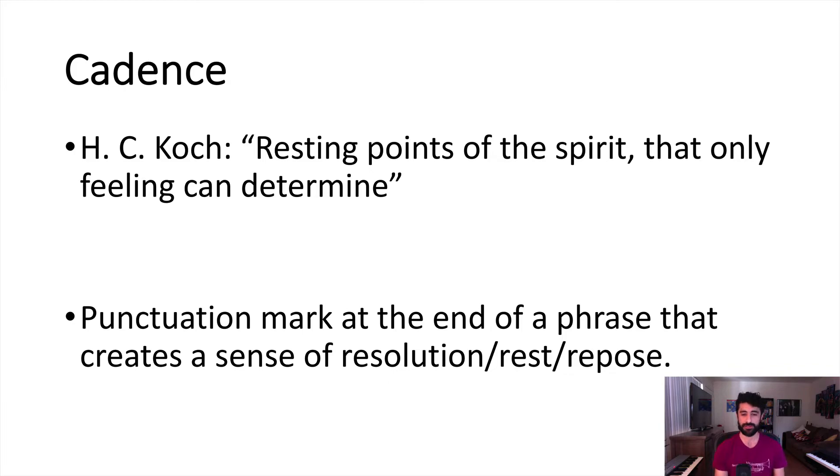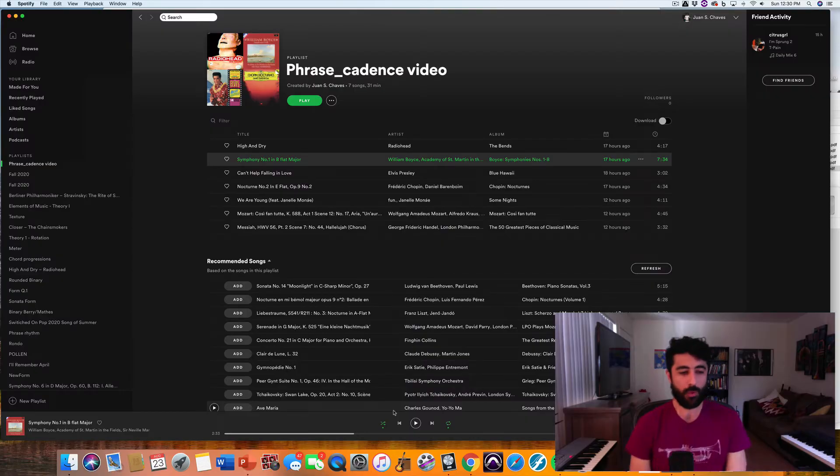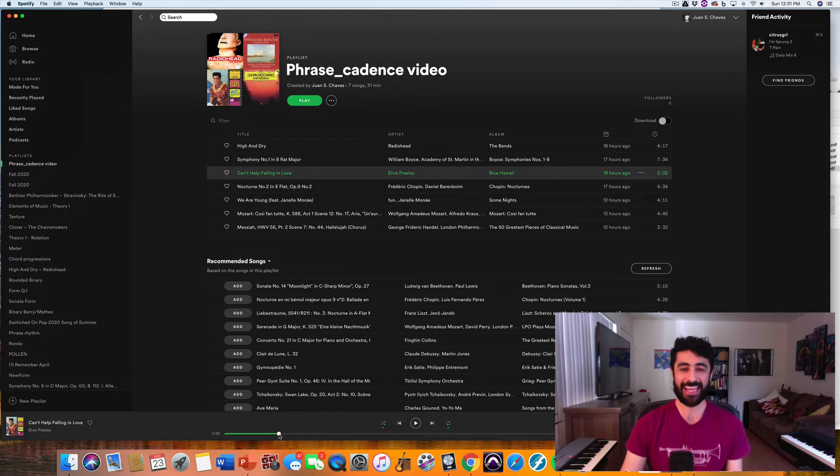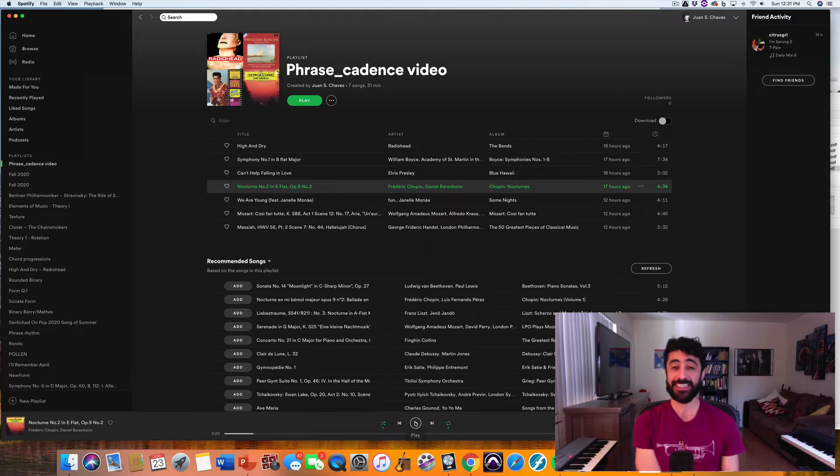This is William Boyce's Symphony No. 1 in B-flat Major. This is Can't Help Falling in Love by Elvis. Let's round it up with one more. This is the ending of the first phrase of the Nocturne No. 2 in E-flat, Op. 9 No. 2 by Chopin.